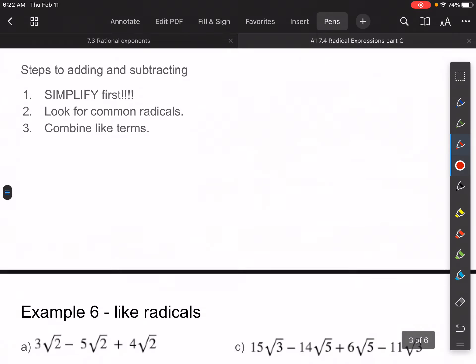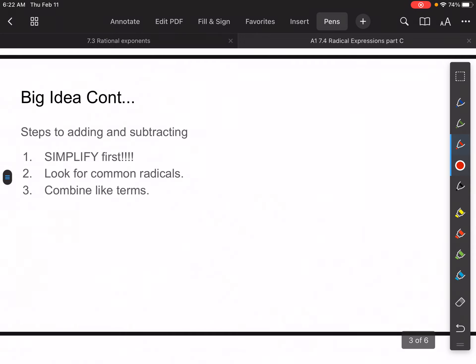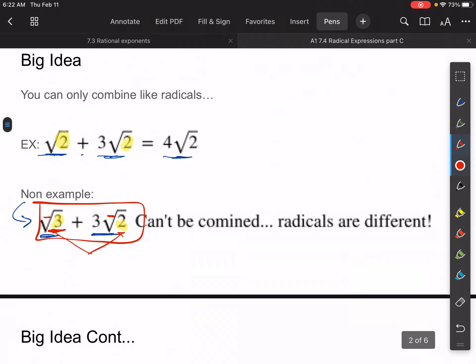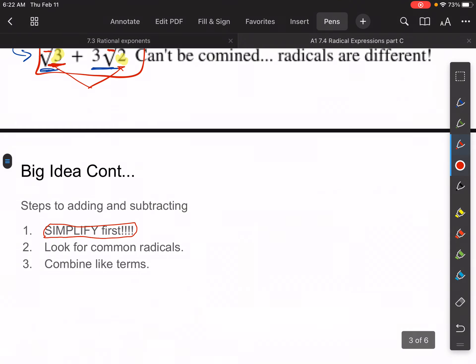Here's the steps to adding and subtracting. Very first thing, make sure that things are simplified before you try to combine. In other words, if I have something like the square root of, let's just say, 24. In order to simplify this, I can take out the perfect squares. So this goes back to the first lesson that we did in this section.